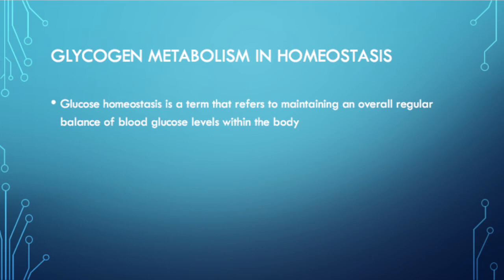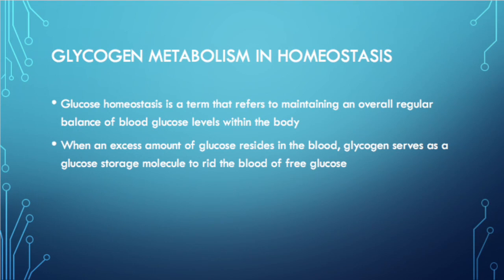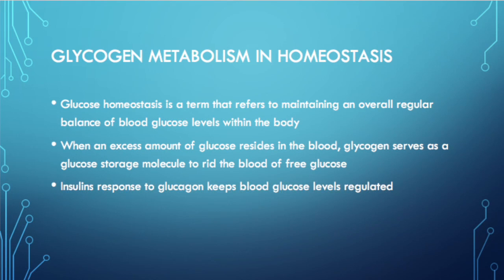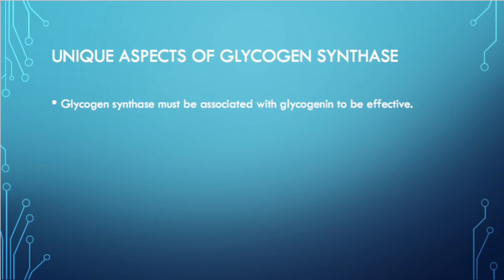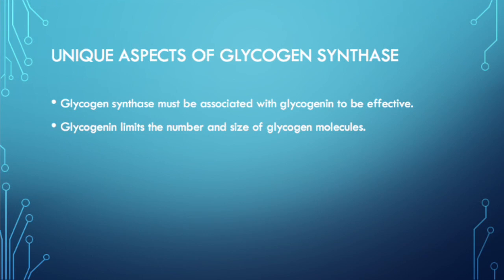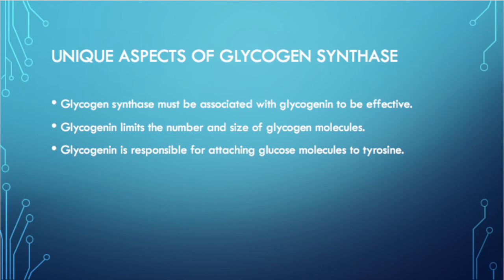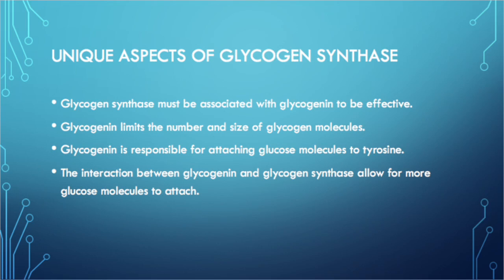Glycogen metabolism plays a role in glucose homeostasis, which refers to maintaining an overall regular balance of blood glucose levels. When excess glucose resides in the blood, glycogen serves as a storage molecule to rid the blood of free glucose. Insulin's response to glucagon keeps blood glucose levels regulated. Glycogenin limits the number and size of glycogen molecules and is responsible for attaching glucose molecules to tyrosine; its interaction with glycogen synthase allows for more glucose molecules to attach until the chain is approximately 10 residues in length, at which point the branching enzyme takes over.